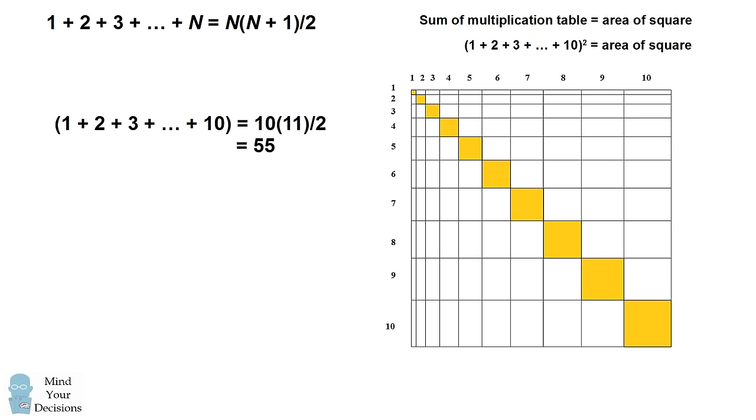So now we'll wrap up the problem. The sum of the numbers up to 10 will be half of a rectangle with side lengths 10 and 11, which is 55. And then to find the sum of all the numbers, we simply square 55,